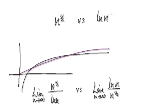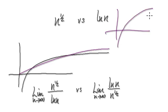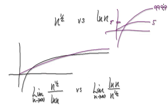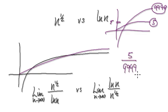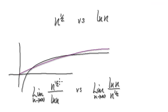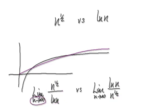But if you have something like this — if the natural log is bigger than the square root — let's say this is 9999 and this here is 5. If you look at the ratio, 5 divided by 9999, the number would be near zero. So you can detect that one is bigger than the other. If you look at the ratio, you can detect which one would be bigger as n heads towards infinity.